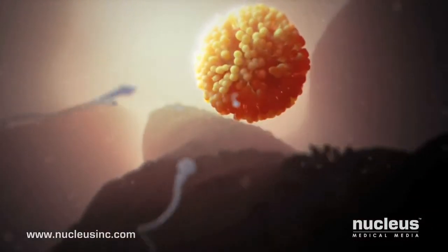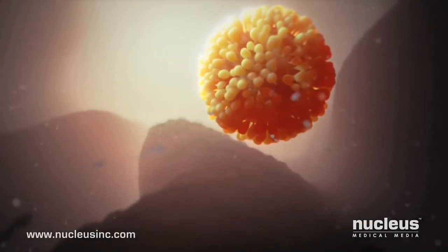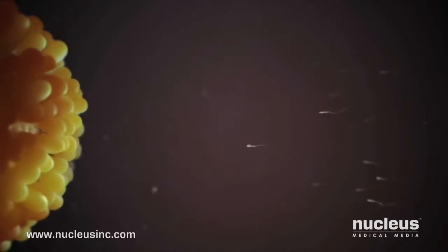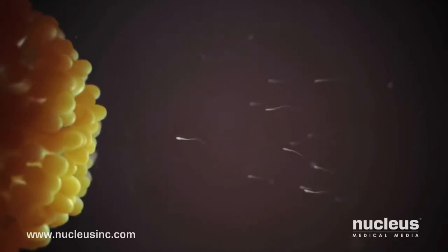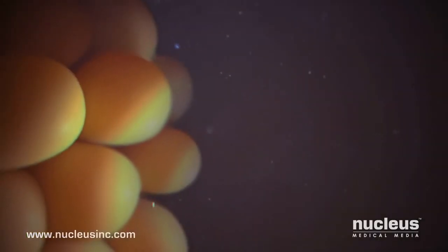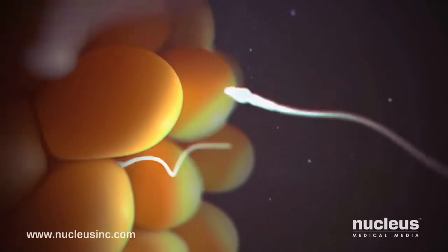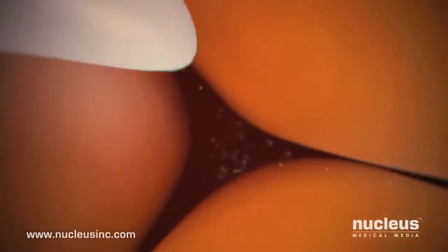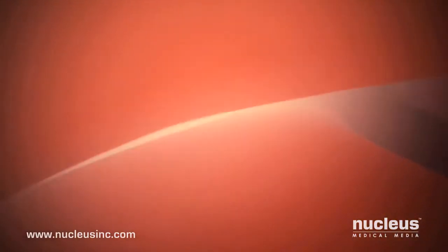At long last, the sperm reach the egg. Only a few dozen of the original 300 million sperm remain. The egg is covered with a layer of cells called the corona radiata. The sperm must push through this layer to reach the outer layer of the egg, the zona pellucida.